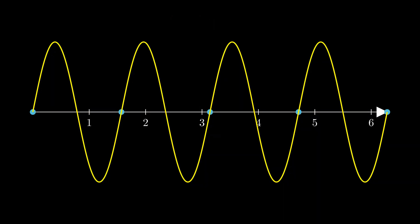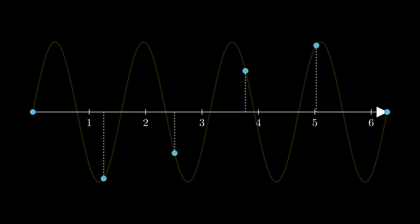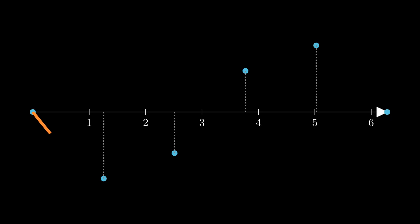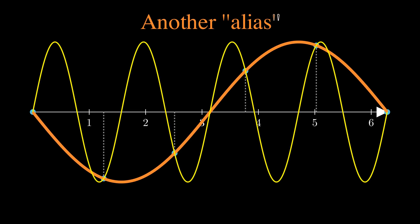Let's go even further. Now when we look at our sample points, we might think the original wave was this orange curve instead. This is another alias. You may have seen other aliasing examples like this.